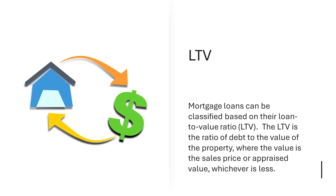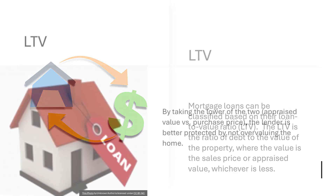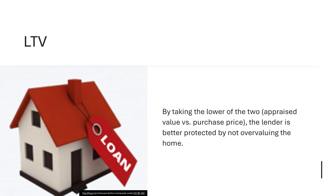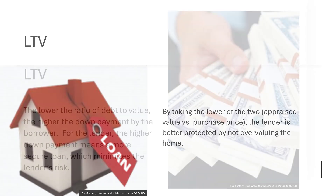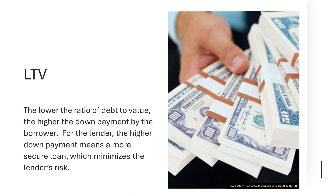Why use the lower of the two? By taking the lower of the two — the appraised value versus the purchase price — the lender is better protected by not overvaluing the home. The lower the ratio of debt to value, the higher the down payment by the borrower. For the lender, a higher down payment means a more secure loan, which minimizes the lender's risk.